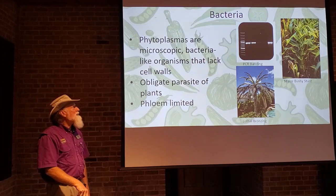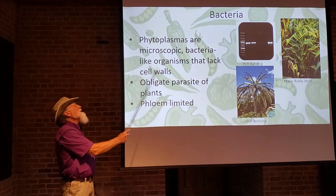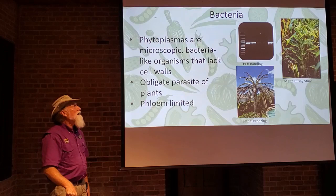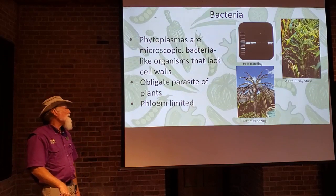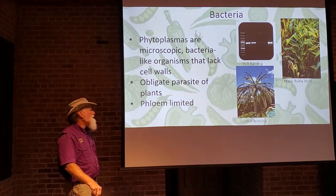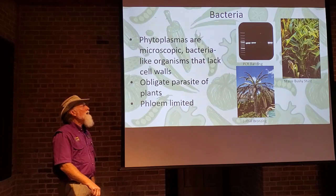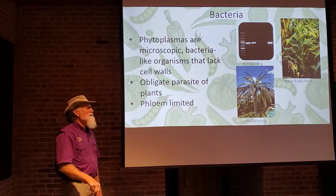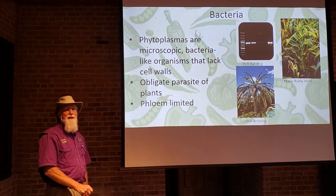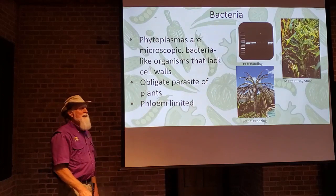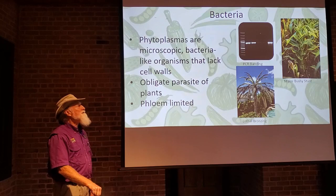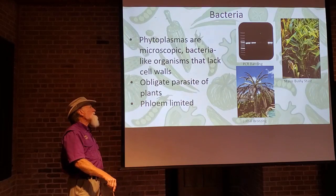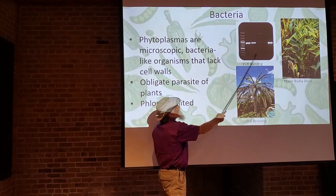Phytoplasmas are a special type of bacterium, usually called bacteria-like organisms. They do not have a cell wall, so you can't grow them on an artificial medium — they're hard to see and isolate under microscopes. They're limited to the phloem of the plant and are obligate parasites, as with viruses. Without the plant host, phytoplasmas cannot live — they're either living inside the plant or being transferred via vector from one plant to another, always living inside something.